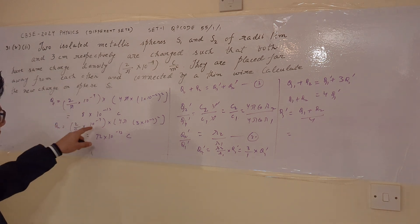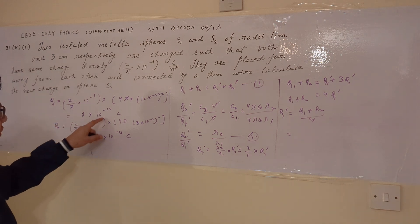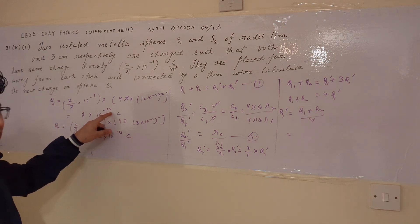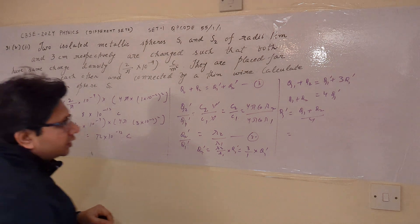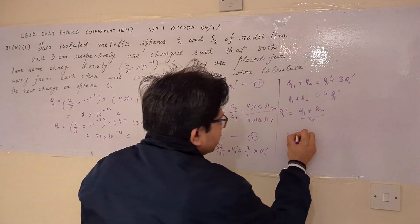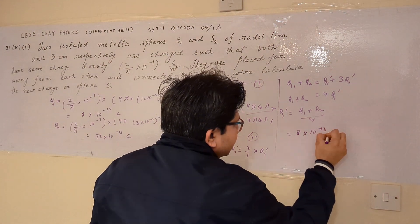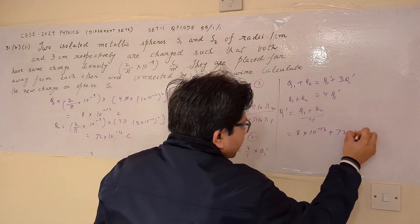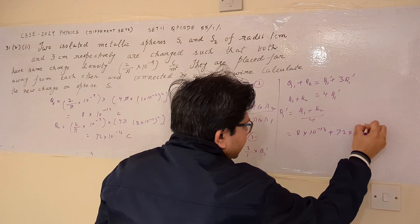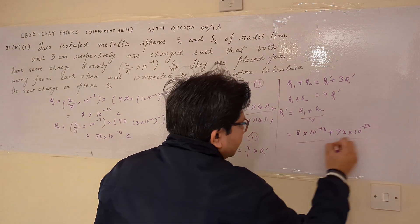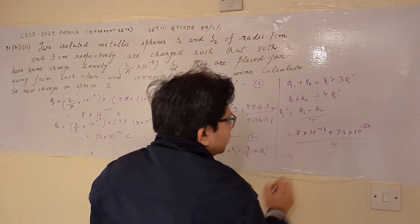Q1 + Q2 = 8 × 10⁻¹³ + 72 × 10⁻¹³ = 80 × 10⁻¹³, divided by 4.